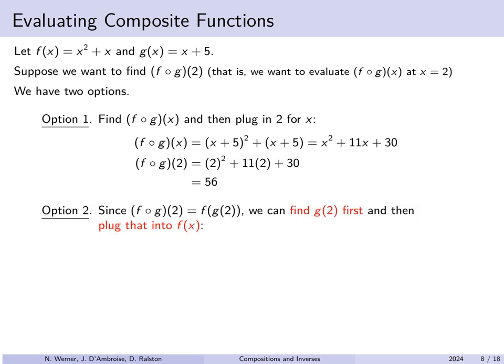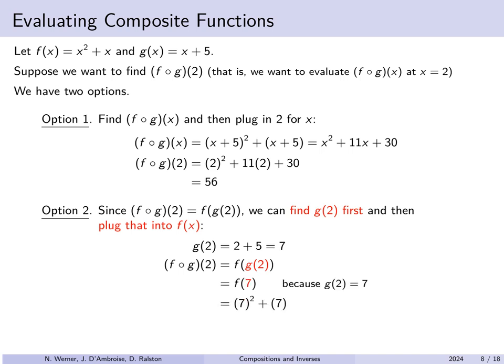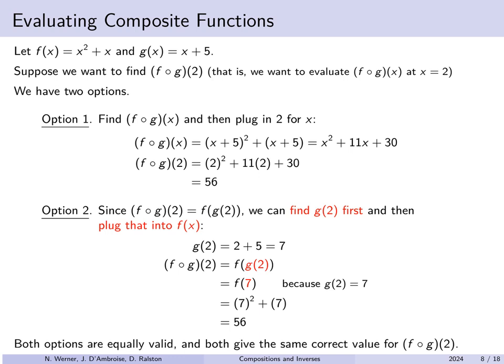The other approach: since we only need f(g(2)), just compute g(2) first. g(2) is 2 plus 5, which equals 7. Then plug that into f: f(7) is 7 squared plus 7, which equals 56 — the same answer. Both approaches are equally valid. If you only need one value, the second method is usually less work; if you need several values, finding the general expression first may be more efficient.